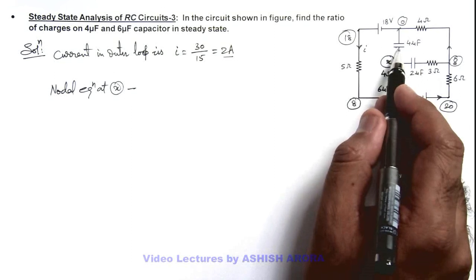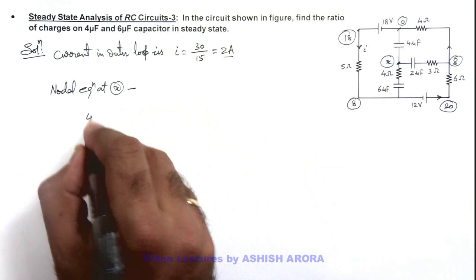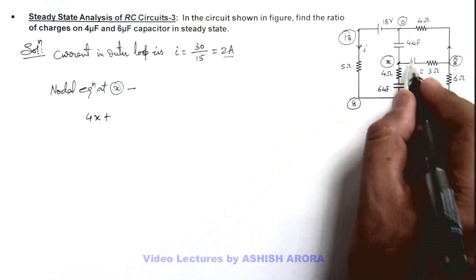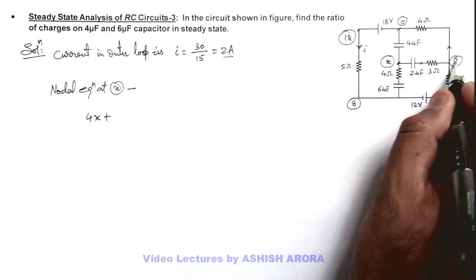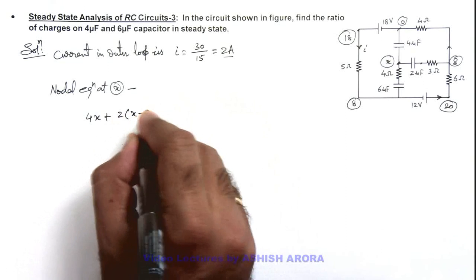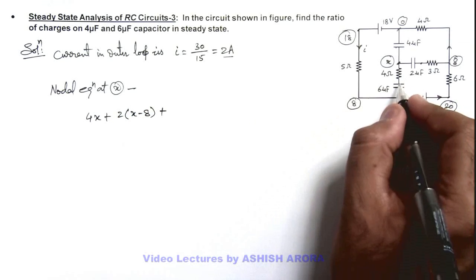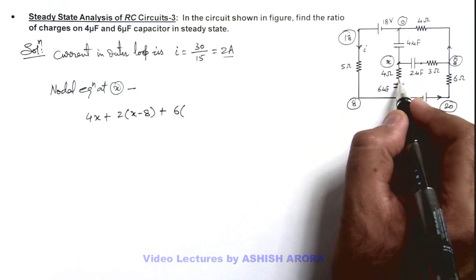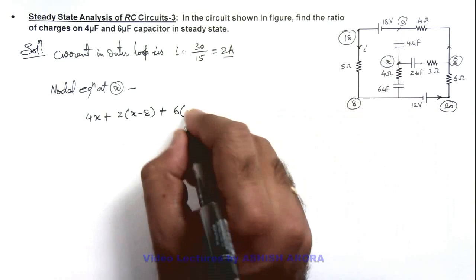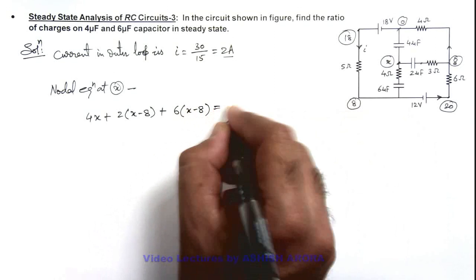Here we can write charge on this plate will be 4x. The charge on this plate will be 2 multiplied by x minus, here potential is 8. This is 2 multiplied by x minus 8 plus. Here potential is 6 multiplied by, here potential will be x only. So this will also be x minus 8 is equal to zero.